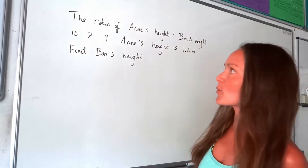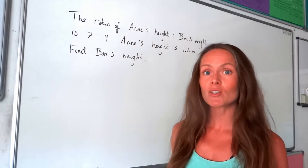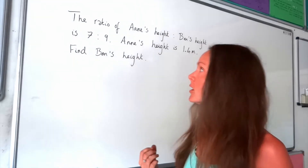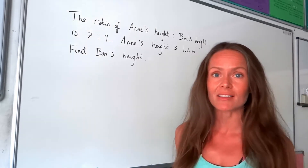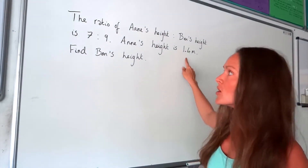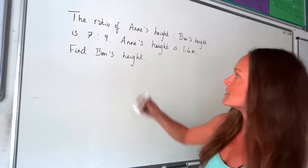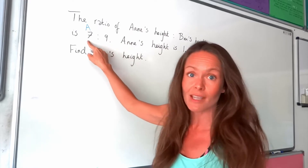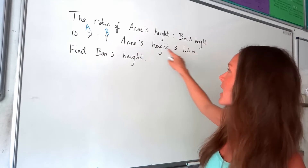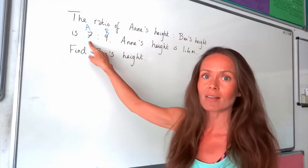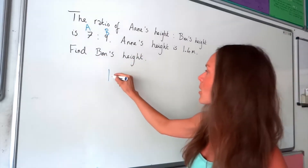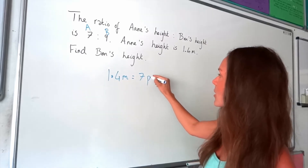In the second exam question, it's a little bit different because we don't need to work out the total number of parts in the ratio, since we haven't been told the total of Anne and Ben's heights. This time we're only told the height of Anne: 1.4 metres. Looking at the ratio, Anne's height is written first, so Anne's height consists of seven parts and Ben's height consists of nine parts. Because we're given Anne's height and Anne is seven parts, we put those seven parts equal to her height — so 1.4 metres equals seven parts.